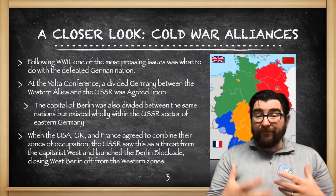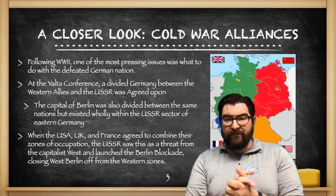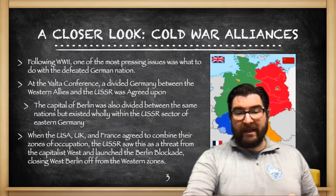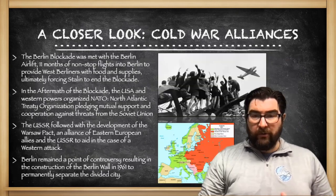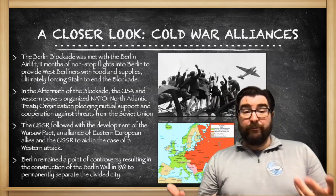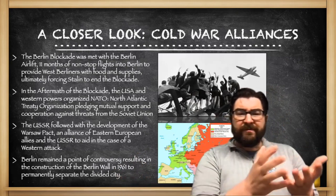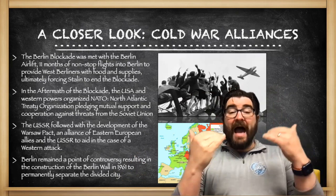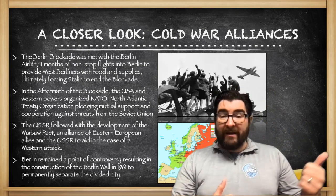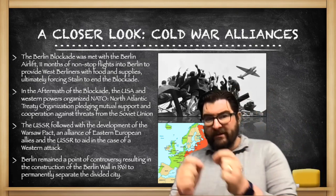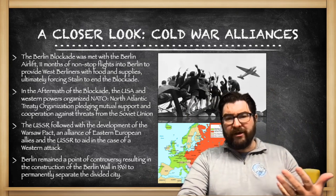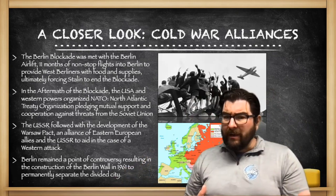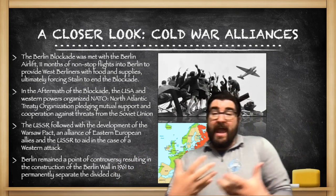When the US, the UK, and France agreed to combine their zones of occupation in 1948, the Soviet Union saw this as a threat from the capitalist West and launched the Berlin Blockade, closing West Berlin off from their Western zones. This was met with the Berlin Airlift, where for 11 months, hundreds of thousands of flights supplied everything the 2 million people of West Berlin needed to survive. After Stalin relented and ended the blockade, the United States and Western powers organized NATO, pledging mutual support against threats from the Soviet Union. The Soviet Union followed with the Warsaw Pact, an alliance of Eastern European allies to aid in the case of a Western attack.